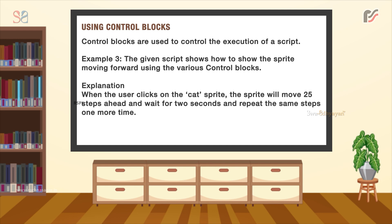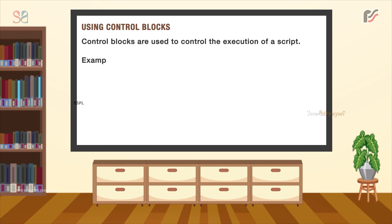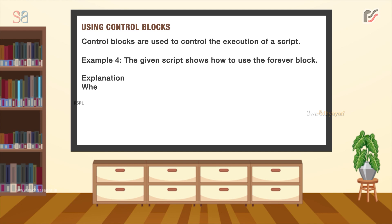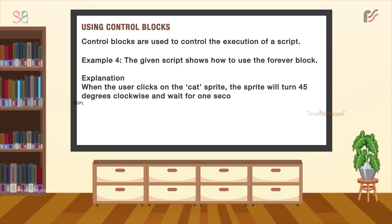Another example: the given script shows how to use the Forever block. When the user clicks on the cat sprite, the sprite will turn 45 degrees clockwise and wait for 1 second. These blocks will run continuously in a loop.